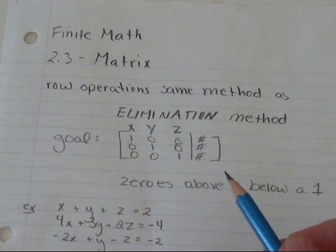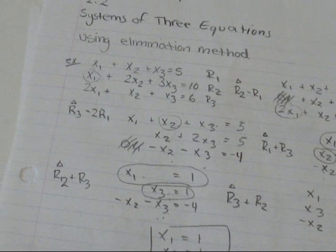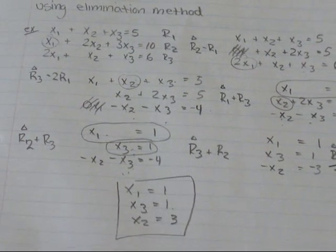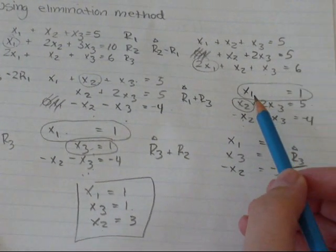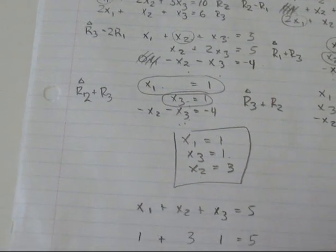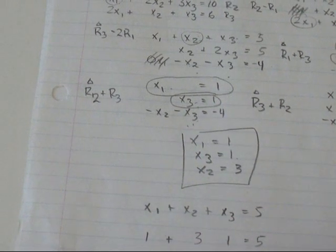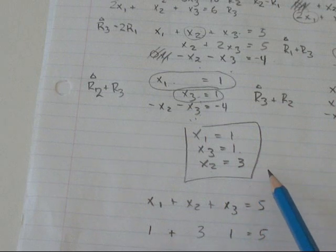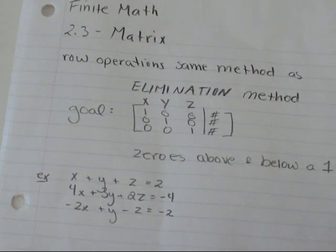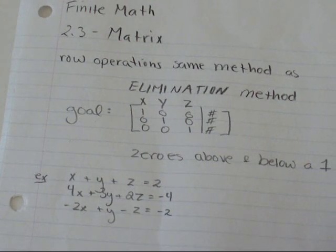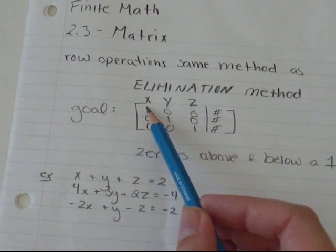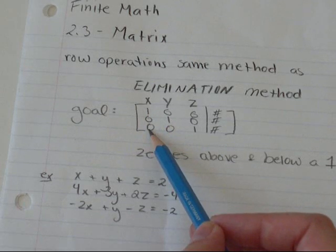So to do this — if you remember on my last video when we did systems of three equations using the elimination method — what you wanted to find was one of your variables equals something, and then do some row operations so that you get a different variable equals something else. Eventually every one of your variables will equal some number. It's the same idea in a matrix: you do the same method through row operations, and the goal is to get a one with zeros below or above.